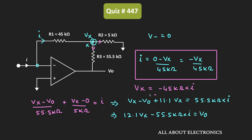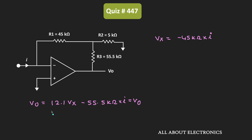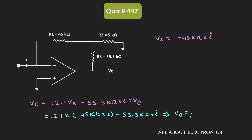Substituting the value of Vx into the expression for Vout: Vout = 12.1 × (−45 kΩ × I) − 55.5 kΩ × I, which gives Vout = −600 kΩ × I. Therefore, Vout / I = −600 kΩ. The negative sign indicates that for the given current direction, the output voltage is negative.